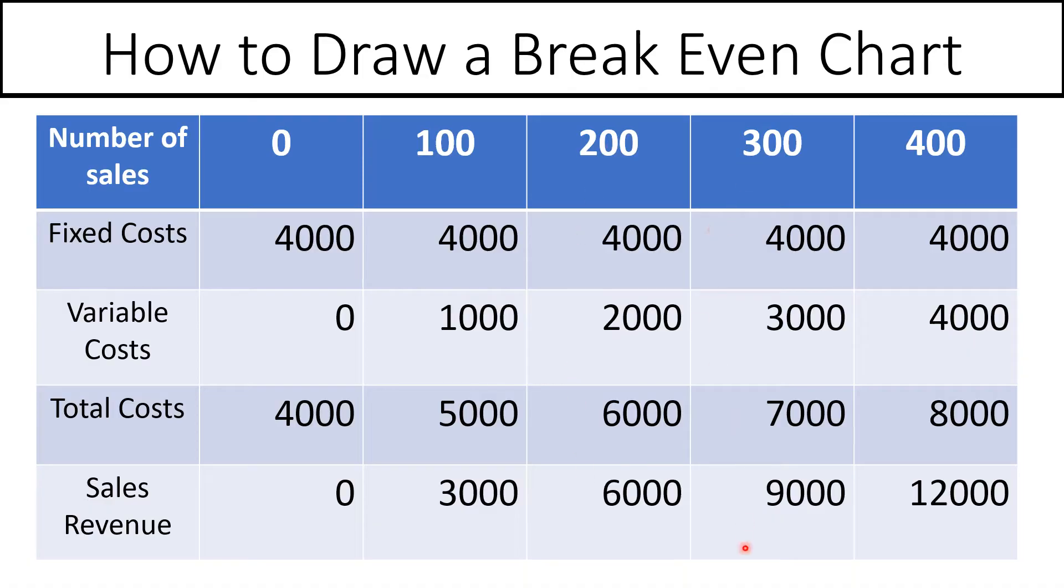300 items, £9,000, and 400 items, £12,000. So we are now going to use this information to draw a break-even chart.